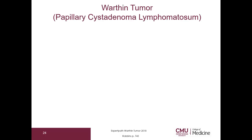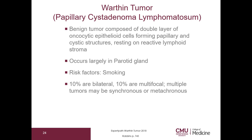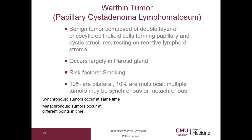Let's go on to Warthin tumor, also known as papillary cystadenoma lymphomatosum. This is a benign tumor composed of a double layer of oncocytic epithelial cells forming papillary and cystic structures resting on a reactive lymphoid stroma. This occurs largely in the parotid gland. The risk factor is smoking. 10% of these are bilateral and 10% are multifocal; multiple tumors may be synchronous — meaning occurring at the same time — or metachronous, meaning at different points in time. Oncocytic describes a finely granular eosinophilic cytoplasm due to large amounts of mitochondria.